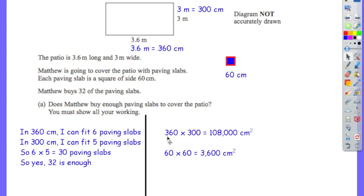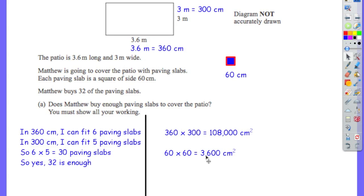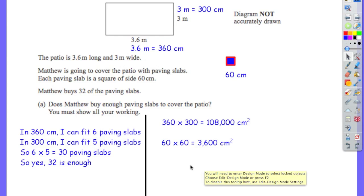Alternatively: 36 times 3 is 108, and there are 3 zeros in total, so you multiply by 1,000 to get 108,000. That's the area for the patio. For the paving slab, the area is 60 times 60. Using the same method: 6 times 6 is 36, multiply by 10 and by 10, so multiply 36 by 100, giving 3,600 square centimetres. You need to know these kinds of skills.